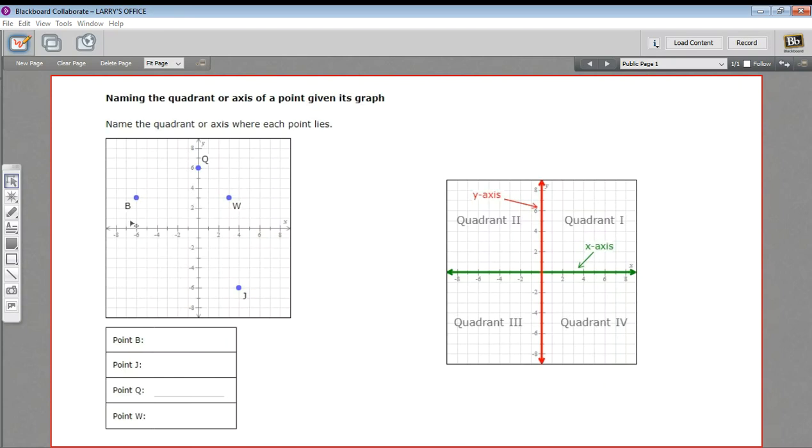In this problem, we have some points plotted on the coordinate plane, and we're being asked to tell what part of the plane they lie in or lie on, which quadrant they're in, or if they're on an axis, which axis is it that they're on.